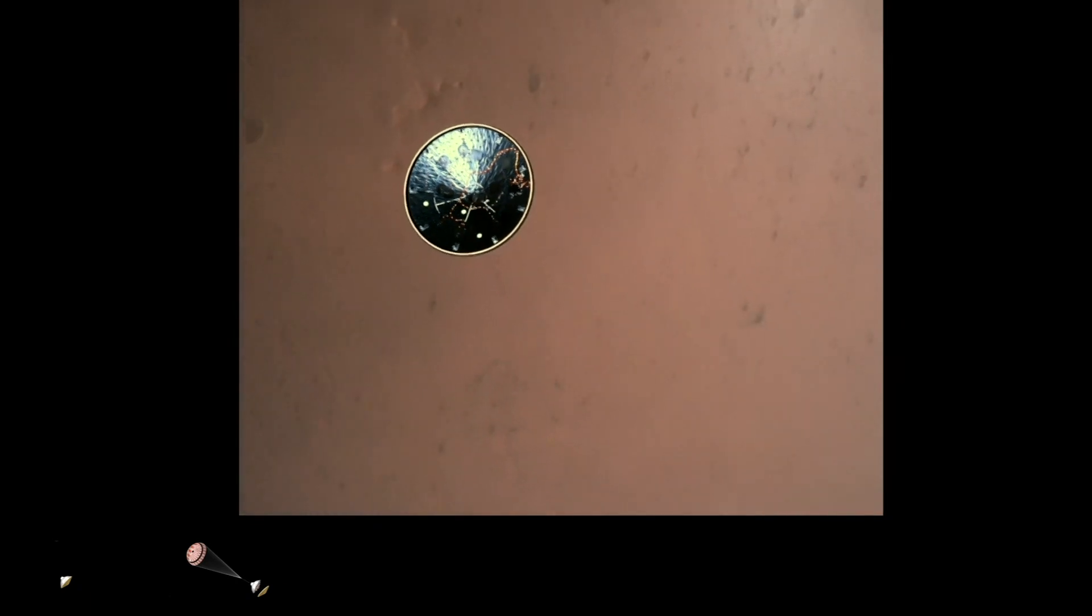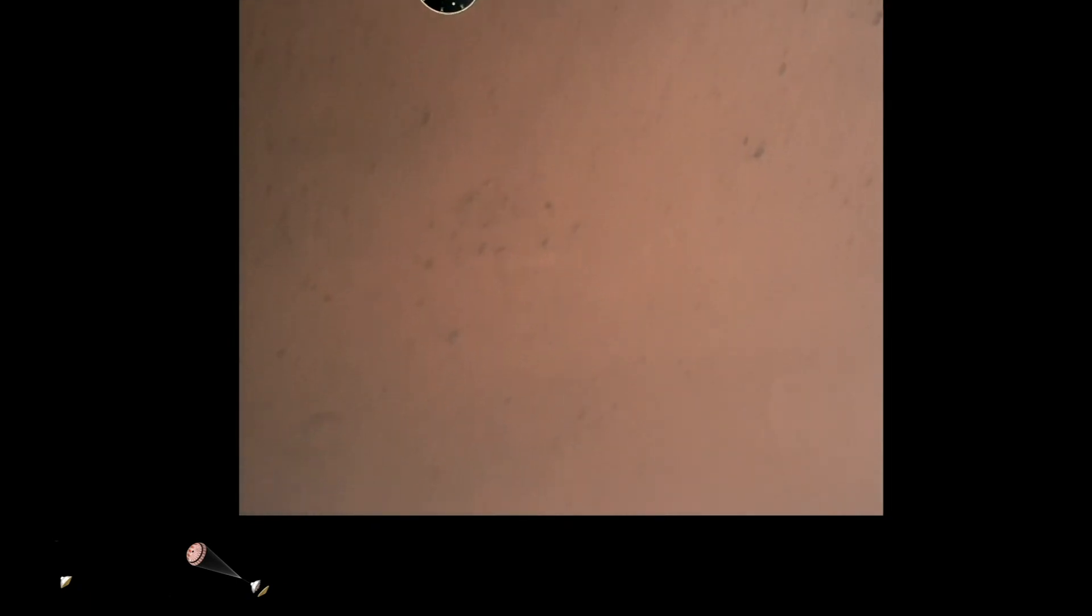Heat shield set. Perseverance has now slowed to subsonic speeds, and the heat shield has been separated. This allows both the radar and the cameras to get their first look at the surface. Current velocity is 145 meters per second at an altitude of about 9.5 kilometers above the surface.